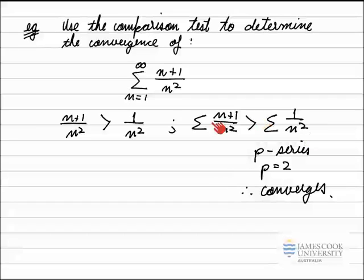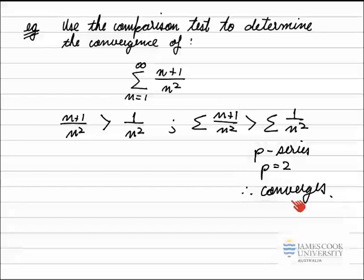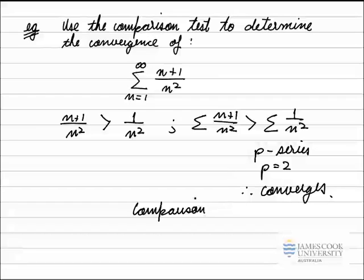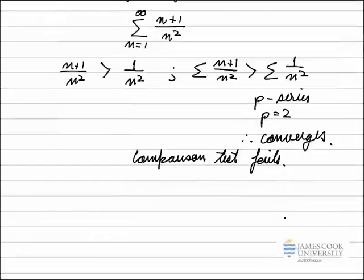Going back to our comparison test: we've got a smaller series that converges. That means the larger series — we still don't know whether it converges or diverges. If the smaller series converges, the larger series might still diverge because it is larger. So in this case, comparing n plus 1 over n squared to 1 over n squared is the incorrect choice, and the comparison test fails. We need to find a better series to compare this one to.